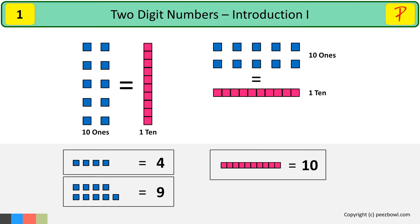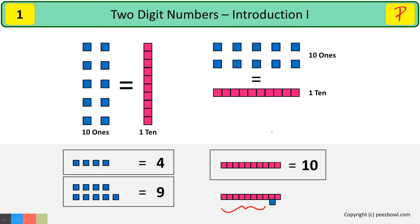Now, what will happen if we add one more blue square to the number ten? Let us see. For ten ones, we will have one ten. And we will keep this one as it is. So this number is ten and one, that is eleven.